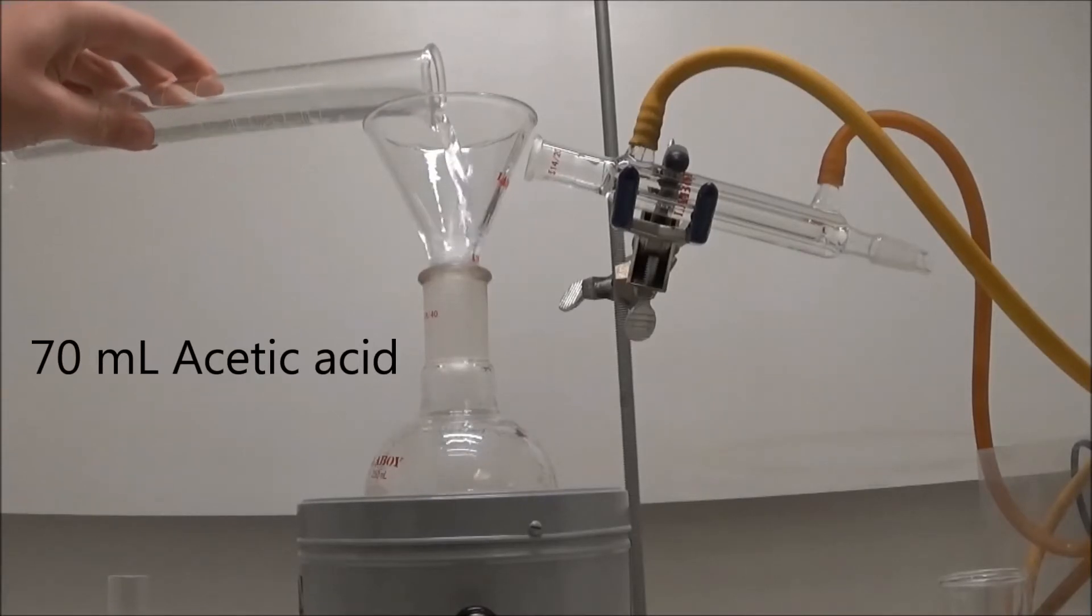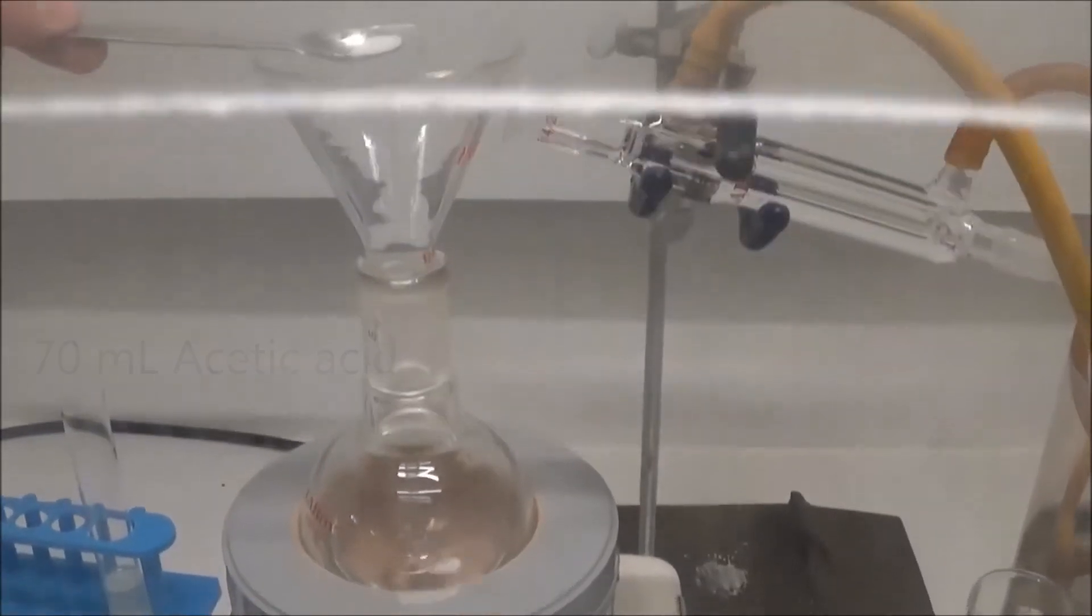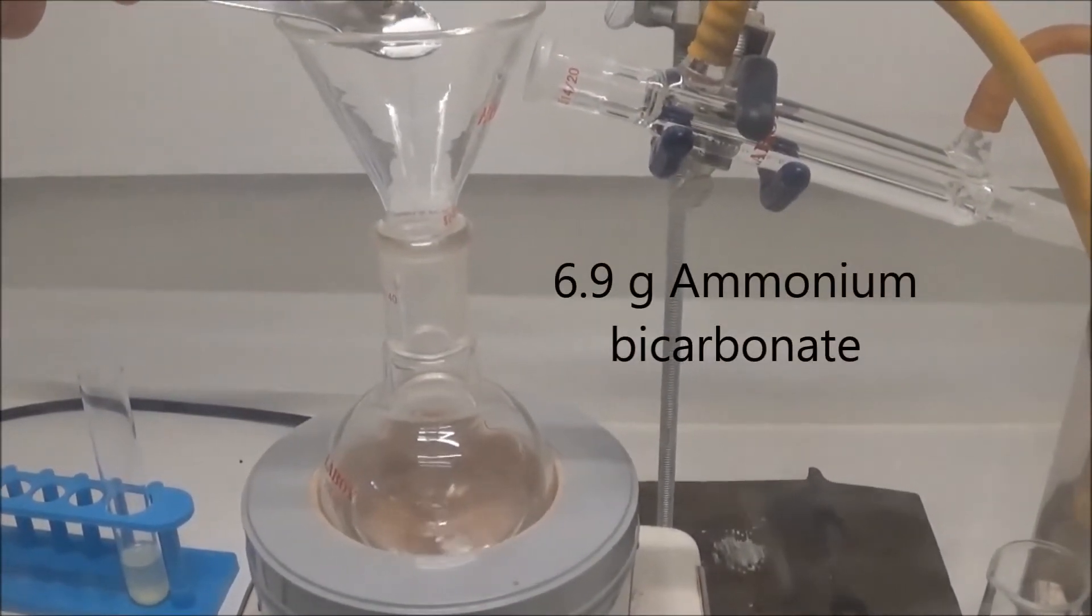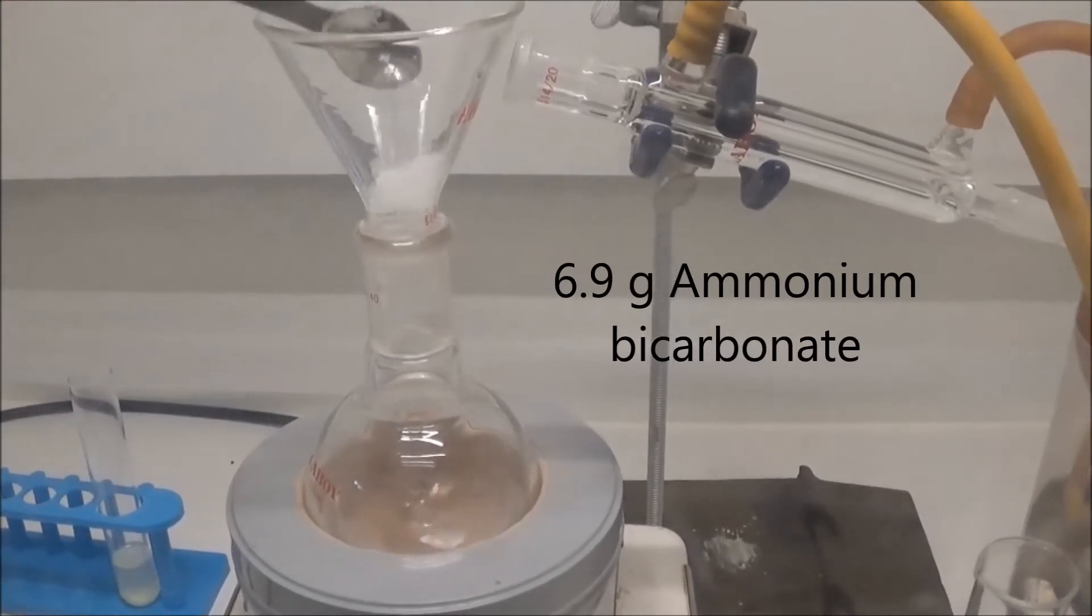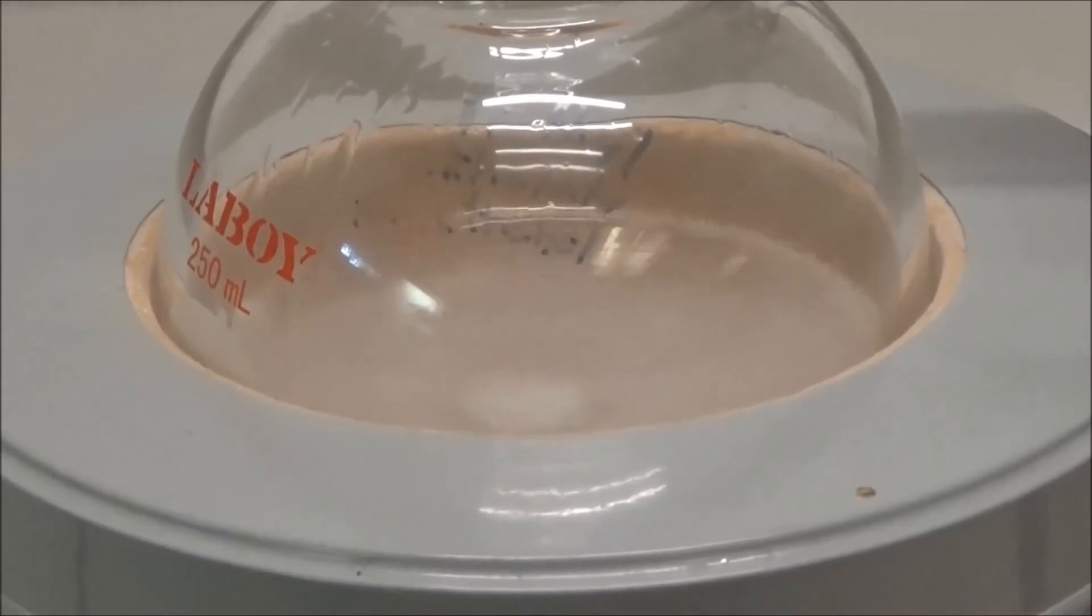To start, I added 70 milliliters of glacial acetic acid to a 250 milliliter flask. I then added, in small portions, 6.9 grams of ammonium bicarbonate. The mixture bubbled, and after it stopped bubbling, I moved on.